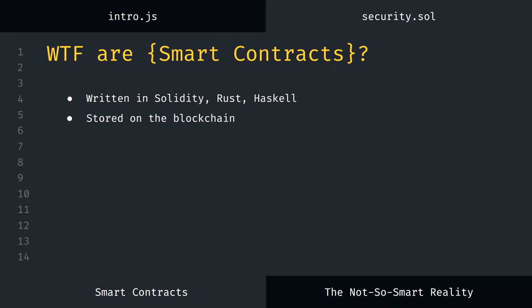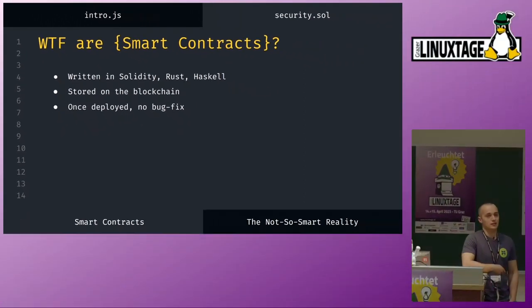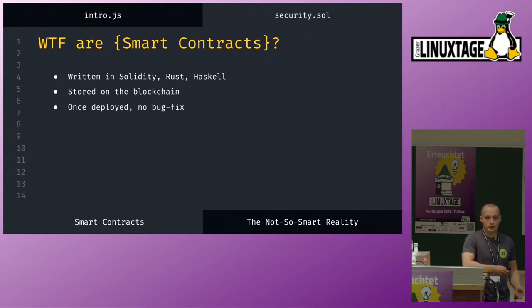With this there comes a problem, because once deployed you can't change it. For a normal program, if you find a bug you just develop a patch or an update and deploy it to everyone. If the code is on the blockchain, there is no way for a standard smart contract to fix this. There are some advanced techniques like proxy setups that help, but on a technical basis a smart contract is there forever. If in seven thousand years someone wants to look at that address, there's still the same bytecode there.